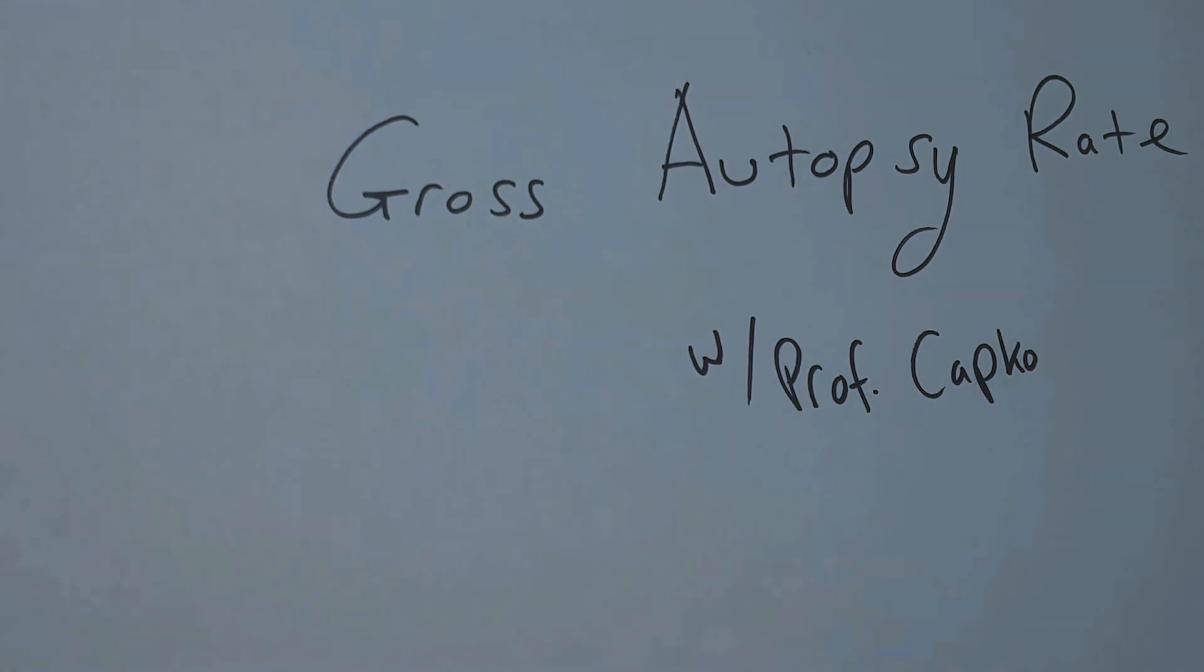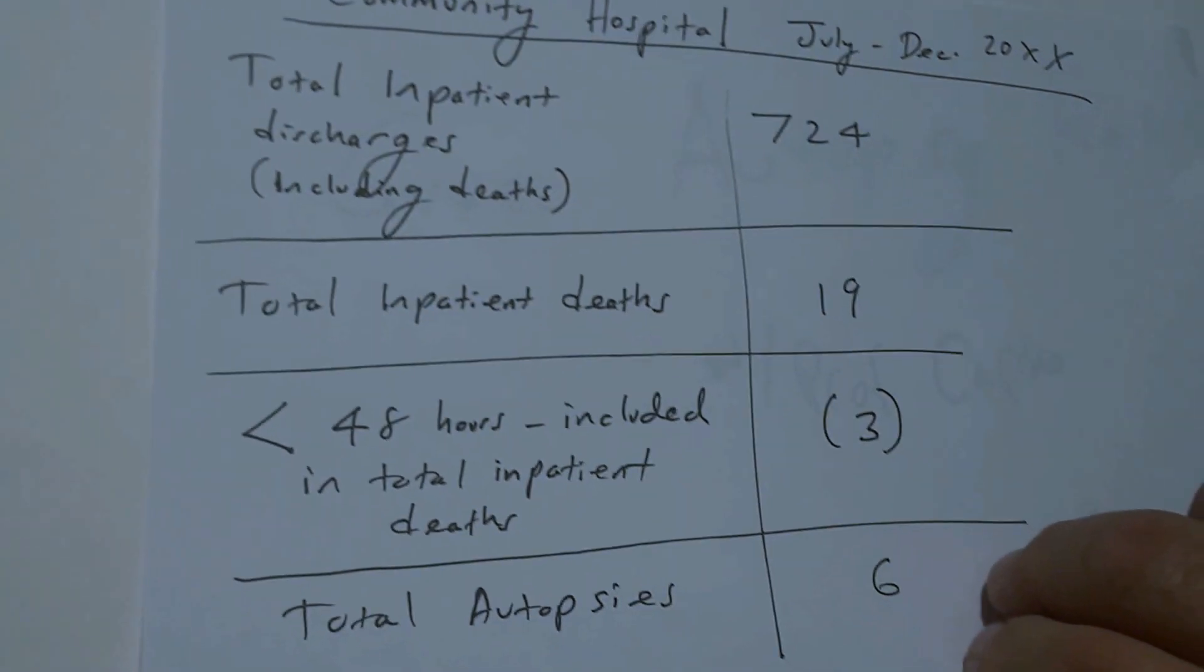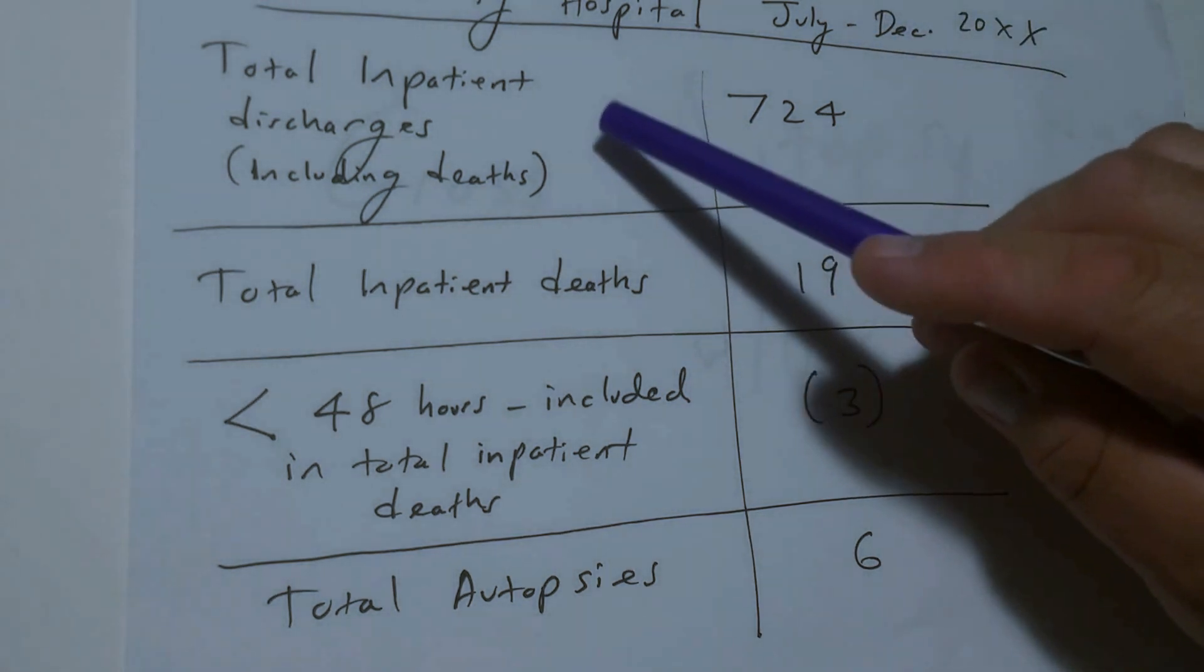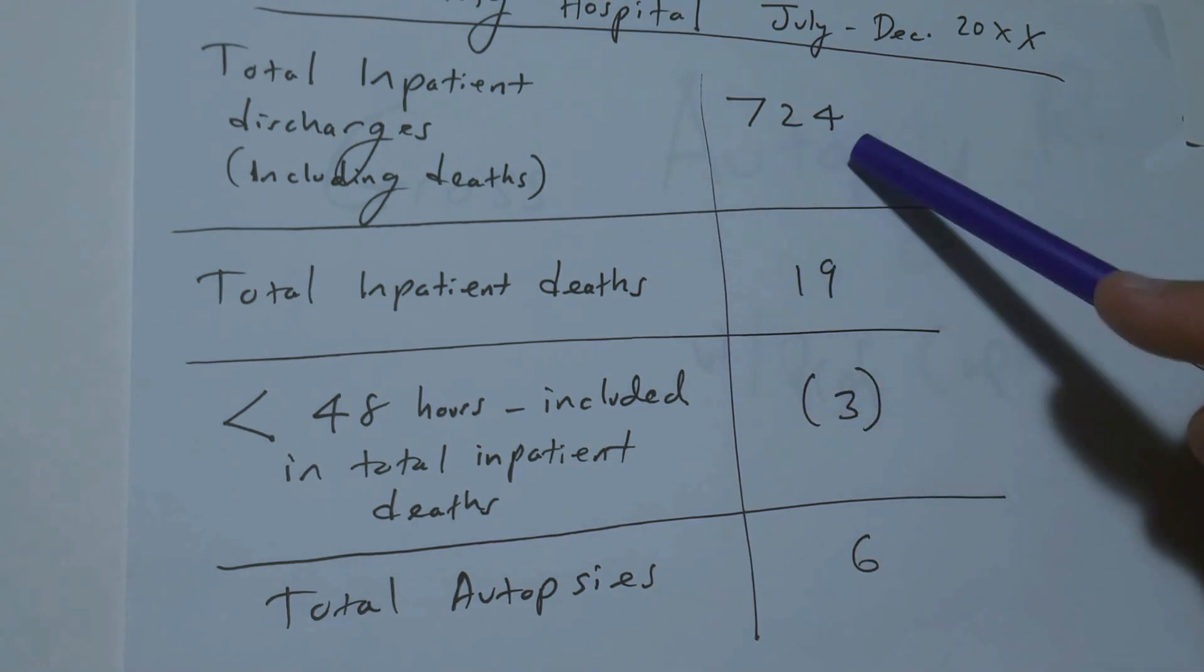Alright, so we're going to need some data to work with. If we have some data from a community hospital that looks like this for a fictional year from July to December, we've got the total inpatient discharges including deaths, 724.